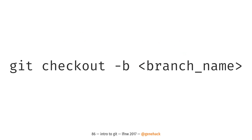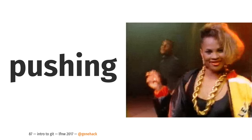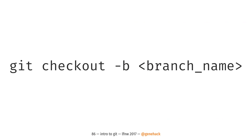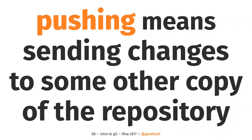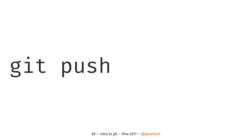The way you make a branch is with a command called checkout. Checkout also allows you to switch between branches, but if you're creating a branch you have to use the '-b' flag. So: 'git checkout -b' and then the name of your new branch. At that point you will have made the branch, you make your changes, you commit your branch. And in order to share your branch with other people, you're going to do something called push. Pushing means sending the changes from your local repository up to some other copy of the repository — this is where GitHub, GitLab, Bitbucket, or your work's Git server may come into play.